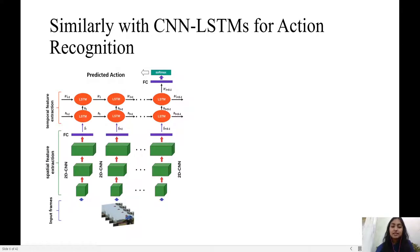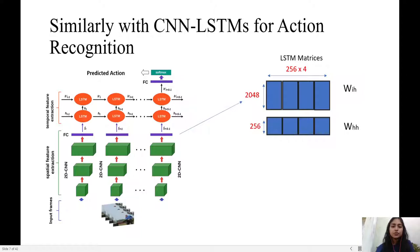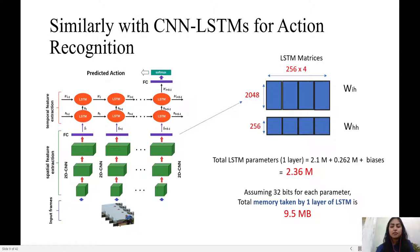Similarly, CNN LSTMs whose feature vectors are of size 2048, given by popular extractors such as InceptionNet, ResNet, EfficientNet, along with a hidden state dimension of 256 leads to millions of parameters and many MBs of space.